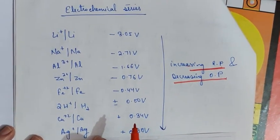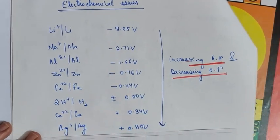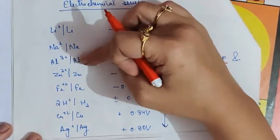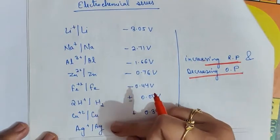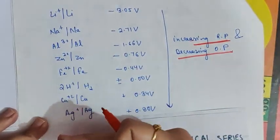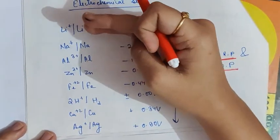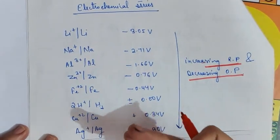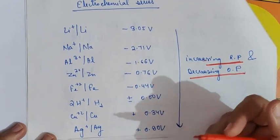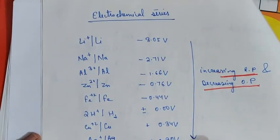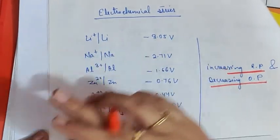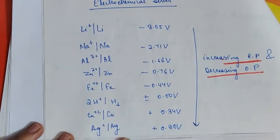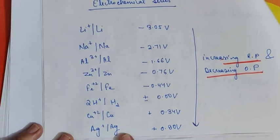You can relate it with the reactivity series. In the reactivity series, the most electropositive or most reactive metals are placed at the top, and the least electropositive metals like gold, silver, and platinum are placed at the bottom. Similarly here, lithium — one of the most reactive metals — is placed at the top of the series, and silver — one of the least reactive metals — is placed at the bottom.